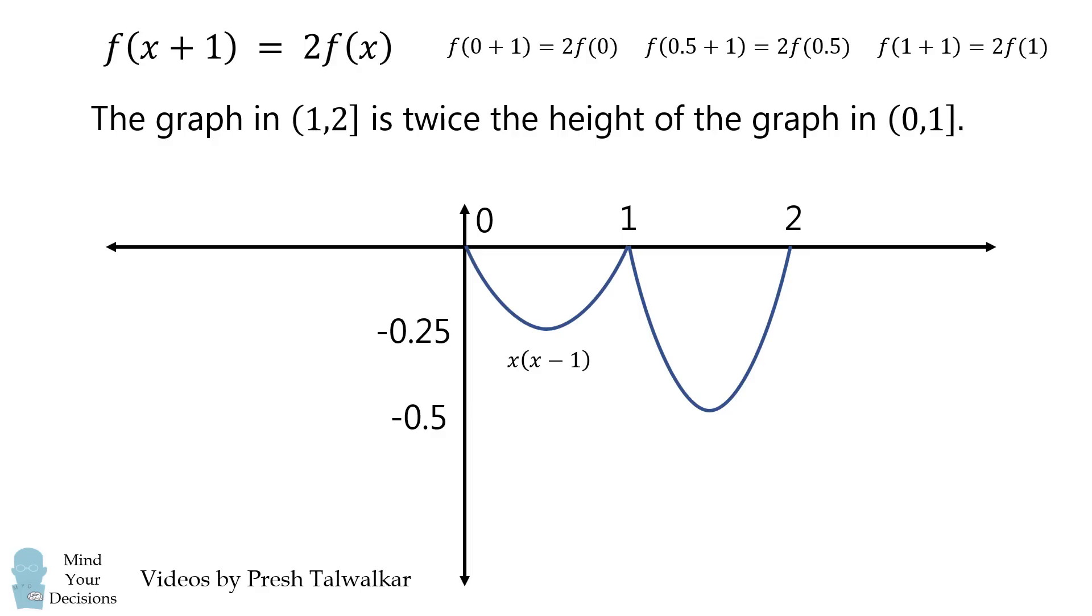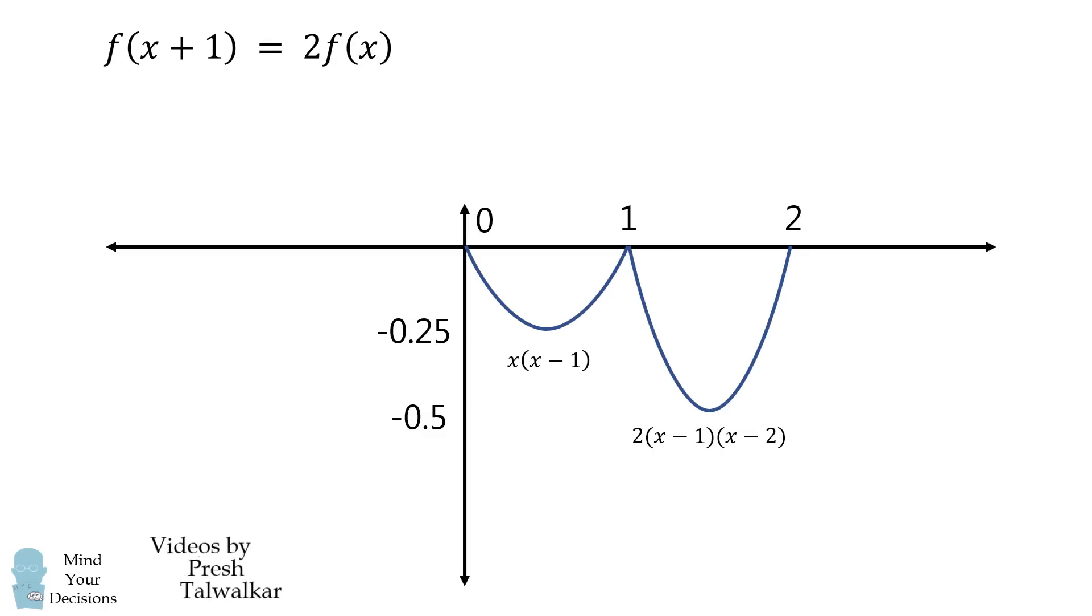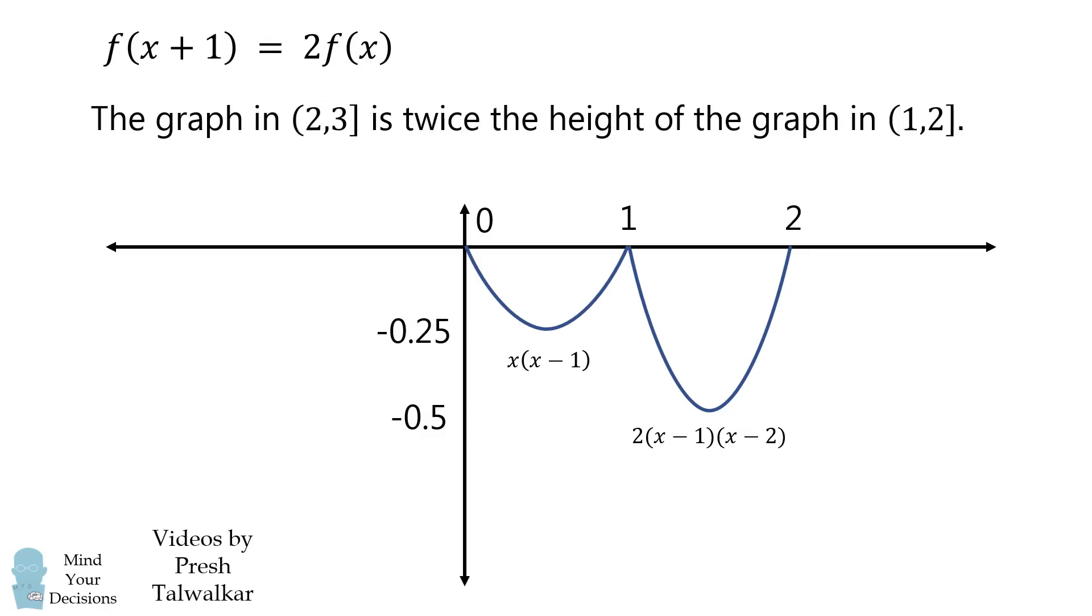Now when we shift a function over, the variable x is going to be mapped to x minus 1. So this parabola is going to have a graph of 2 because it's twice as tall, and it's going to be multiplied by the quantity x minus 1 multiplied by the quantity x minus 2. So let's continue graphing this in the next interval. It's going to be twice the height of the graph in the interval from 1 to 2 and shift it over. So it's going to look something like this. So this parabola will have an equation 4 times the quantity x minus 2 times the quantity x minus 3.